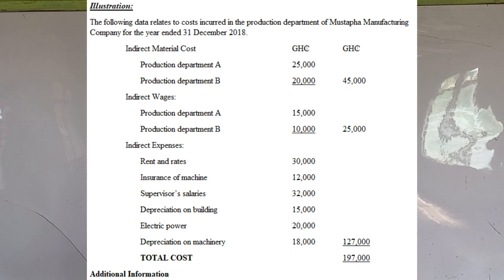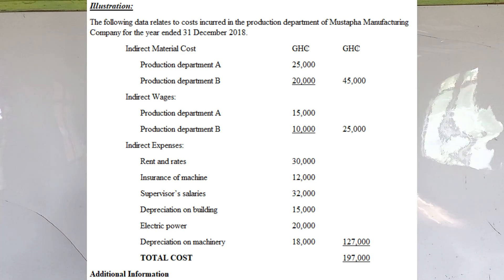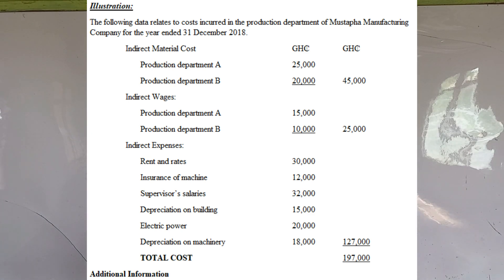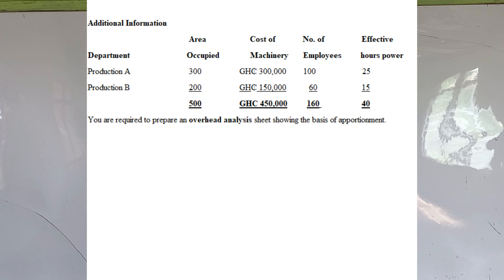The indirect expenses have not been split — we call them common expenses. Common expenses are expenses incurred jointly by two or more departments. We have to use a suitable basis to apportion them. The indirect expenses are: rent and rates 30,000, insurance of machines 12,000, supervisor salaries 32,000, depreciation on building 15,000, electric power 20,000, and depreciation of machinery 18,000 — giving a total of 127,000 for indirect expenses and total cost of 197,000.